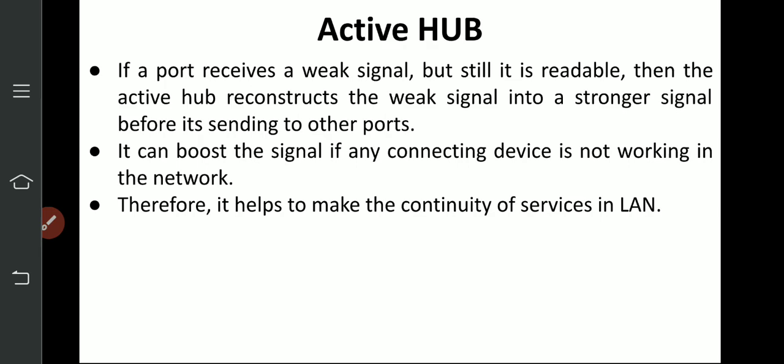If a port receives a weak signal that is still readable, the active hub reconstructs the weak signal into a stronger signal before sending it to other ports. If the signal has attenuated and reaches the hub weakly, it can reconstruct, amplify, and regenerate it, then forward it to the other ports. This helps maintain continuity of service in the LAN.